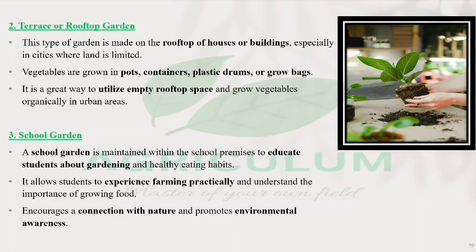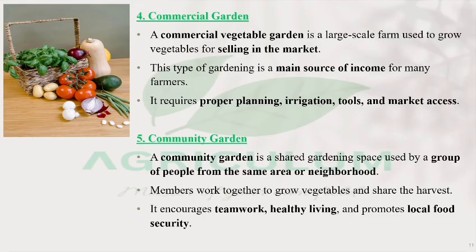The fourth one is commercial garden, which is where the majority of farmers in every country operate. Commercial garden becomes the main source of income. If you grow vegetables on a large scale — on a farm — for the purpose of selling in the market, then it is a commercial garden. It is mostly farmers' main source of income. It requires proper planning, irrigation tools, and market access — not only for personal use, but for economic wealth generation as well.